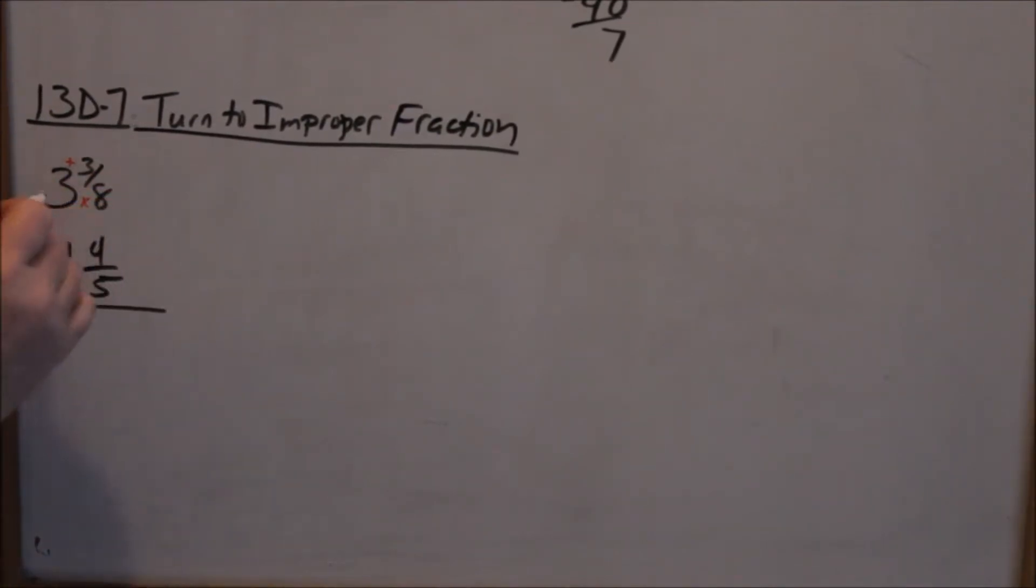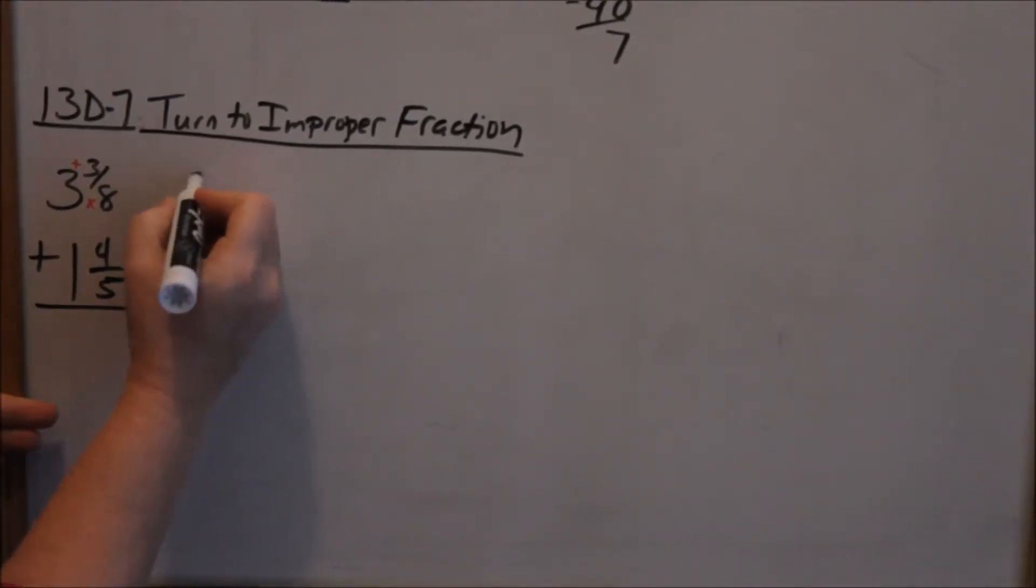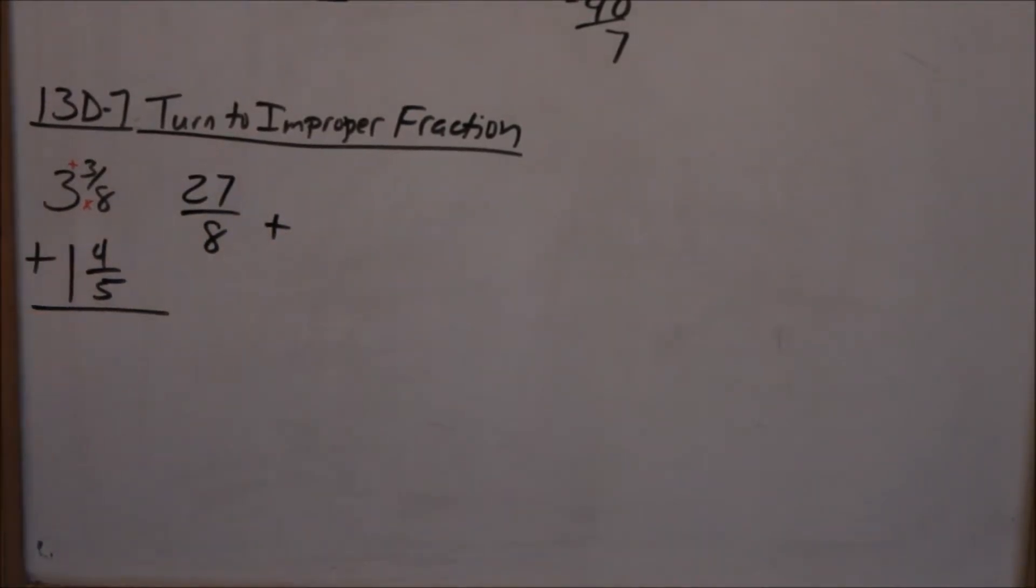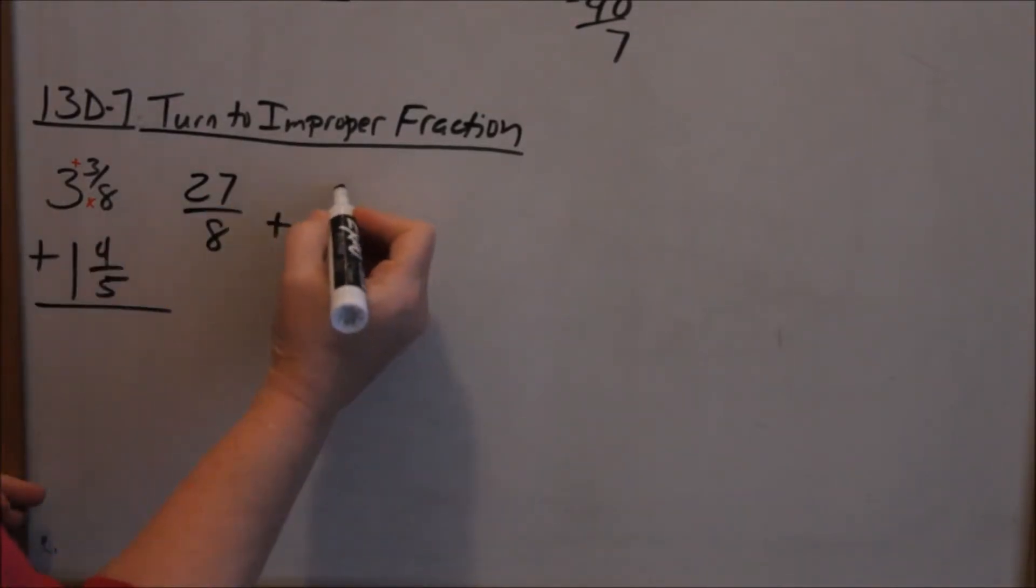So 8 times 3 is 24, 24 plus 3 is 27. So that would be 27 eighths. And then I like writing, adding fractions horizontally. So turn this into improper, 5 times 1 is 5 plus 4 is 9, 9 fifths. Denominator stays the same.